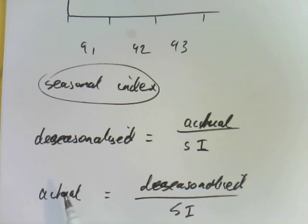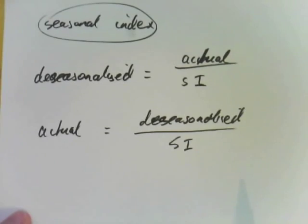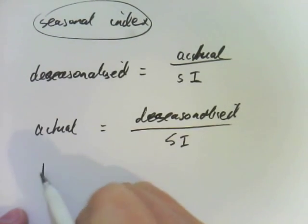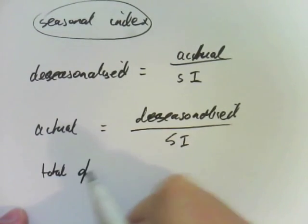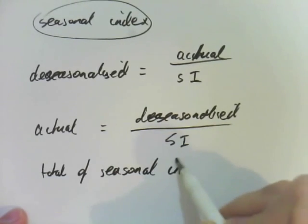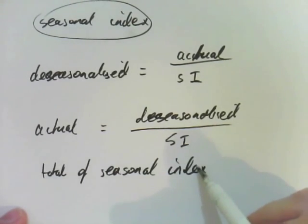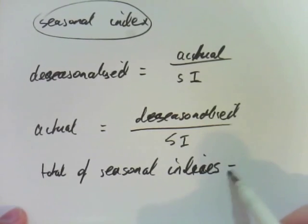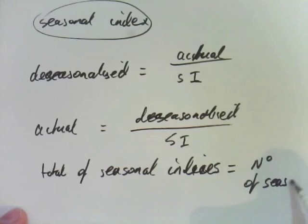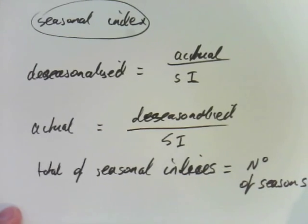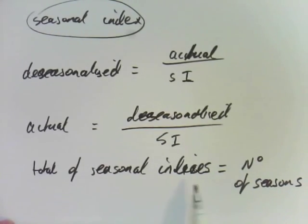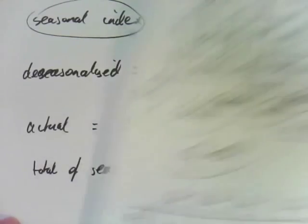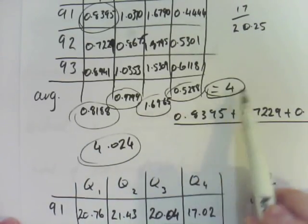Another very important thing to remember is the total of seasonal indices, because it's plural, equals the number of seasons. So in my example I had four seasons, so the total if I added up all of my seasonal indices, remember if I add up these four numbers, it had to come to four because I had four different seasons.